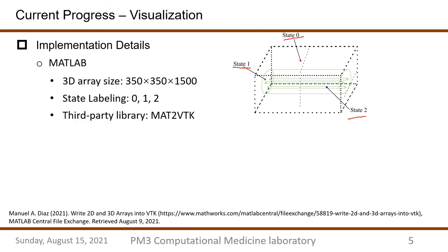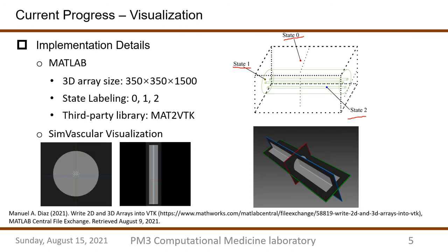Subsequently, we convert the .mat file into a .vtk file. This is a format that can be read by visualization software like ParaView and SimVascular. For this, we use a third-party library called Mat2VTK, which can be obtained from the MathWorks File Exchange official website. For the visualization, it depicts as the following figures. As you can see, the visualization accurately meets with our design.